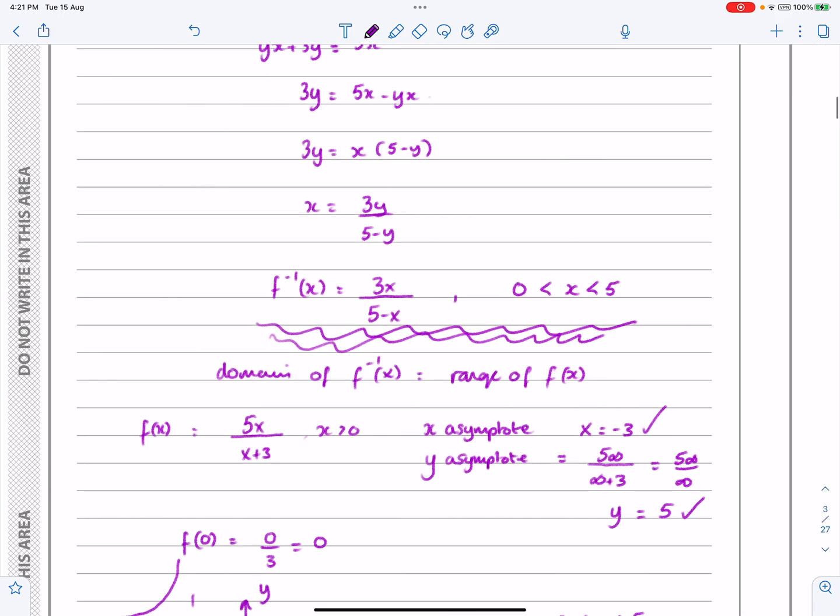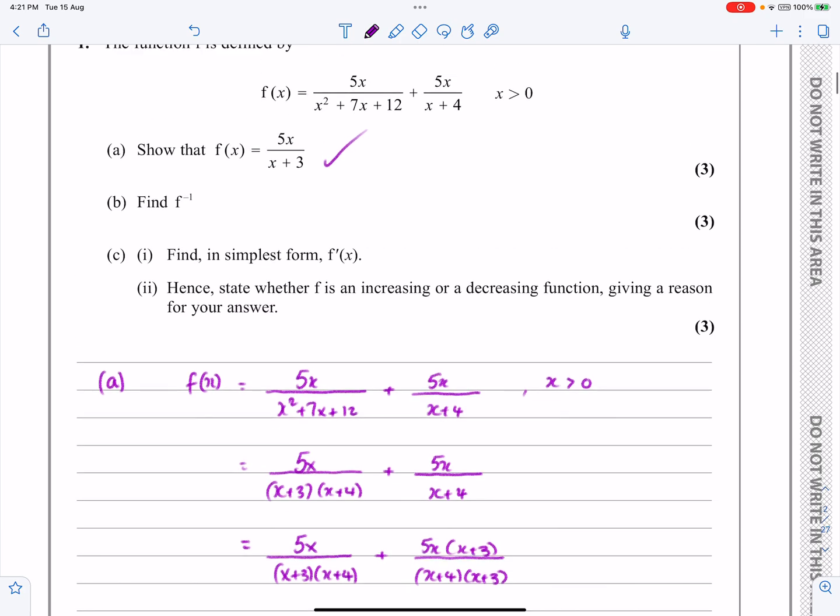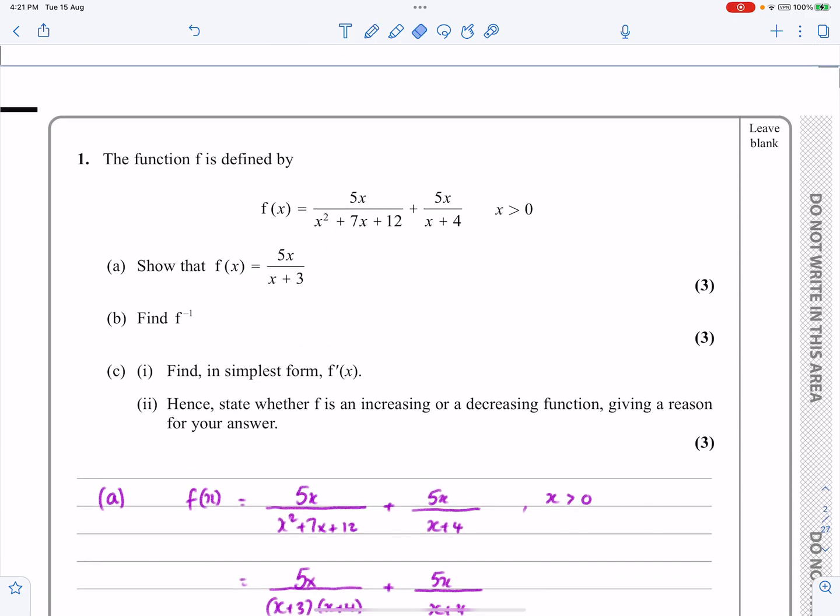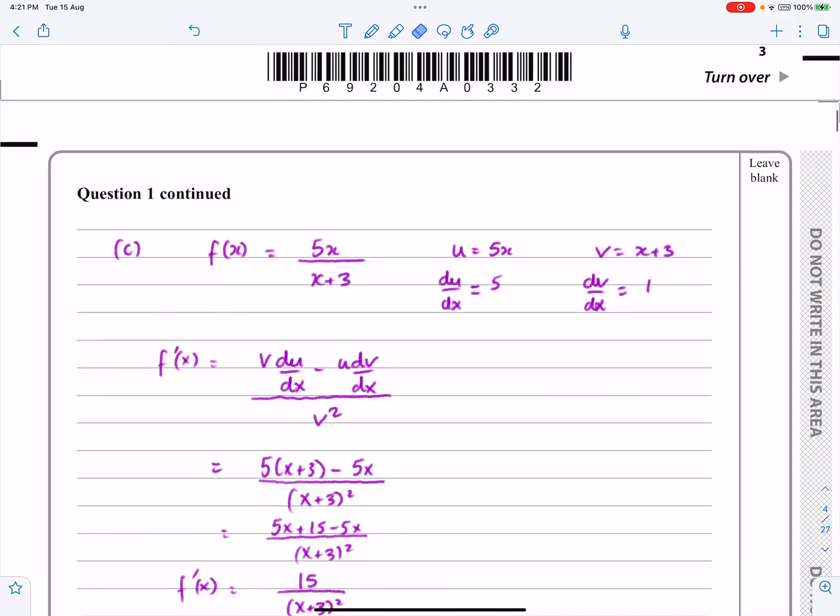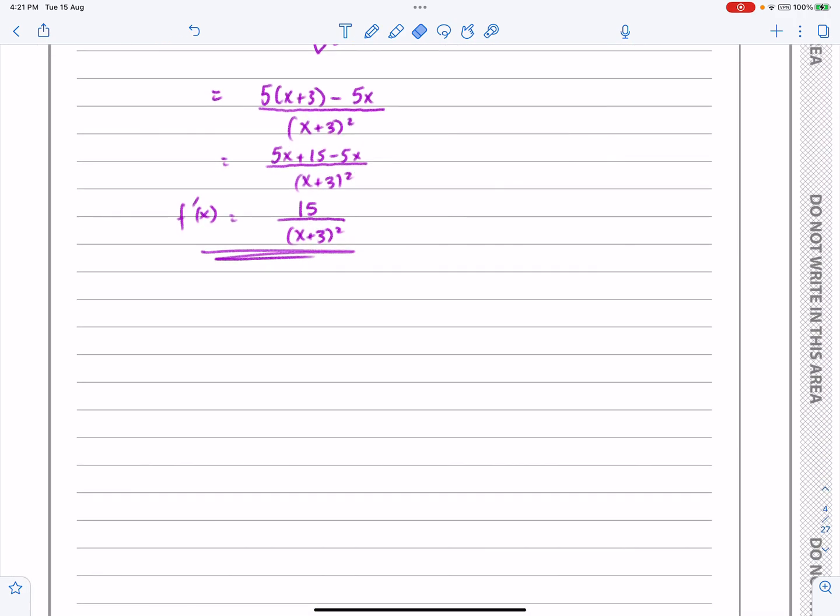And then what was the other bit? It said something about increasing and decreasing functions, didn't it? Hence, state whether it's increasing or decreasing. So this is just you making sure you've revised the whole of your syllabus. Increasing functions are where f'(x) is always positive. Decreasing functions is where f'(x) is always negative. In this one, since f'(x) is always positive, has to be, doesn't it? We're doing 15 divided by something squared. And x squared is not zero. So since f'(x) is always positive, therefore it is an increasing function.